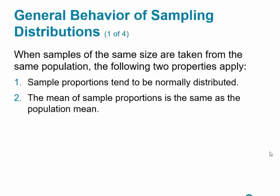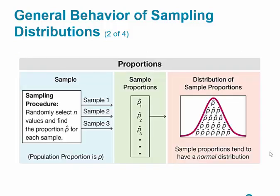When samples of the same size are taken from the same population, two properties apply. The sample proportions tend to be normally distributed, and the mean of the sample proportions is the same as the population mean. This second property is a really important result.